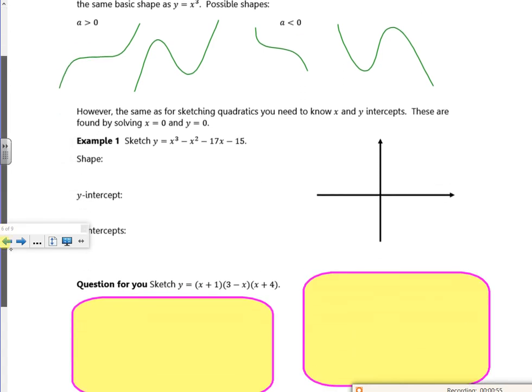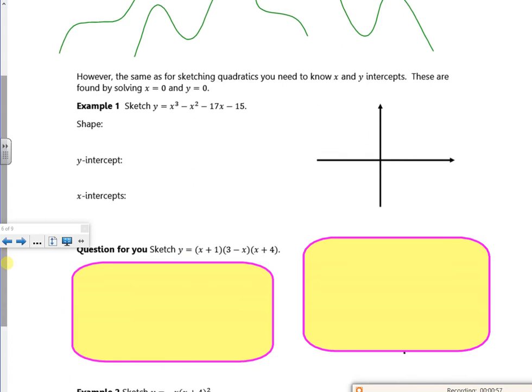The good thing is you can actually sketch it and check what it looks like. I'm going to use poly as opposed to the sketching function. This has a positive x³ term, so I know my general shape will look something like that.